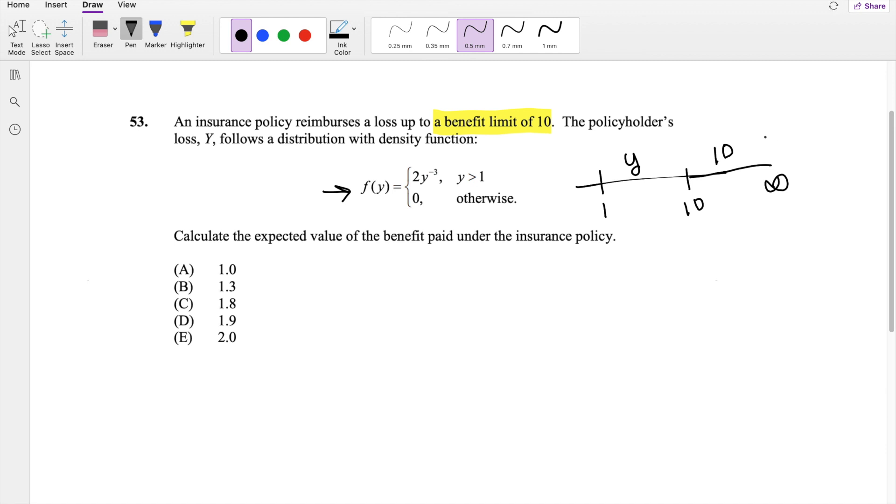So then this becomes a pretty simple expected value problem. The expected value of Y is equal to, from 1 to 10, Y times F of Y, plus from 10 to infinity, it's going to be 10 times F of Y.